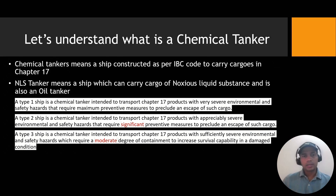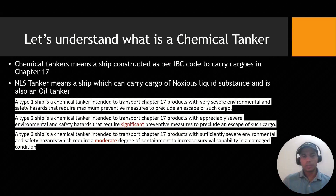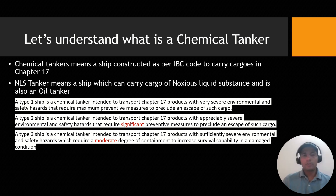So let's understand what is a chemical tanker. A chemical tanker simply means a ship which is constructed as per the IBC code to carry cargoes as per Chapter 17. Next, we have noxious liquid substances — the NLS tanker means a ship which can carry a cargo of NLS and which is also an oil tanker.